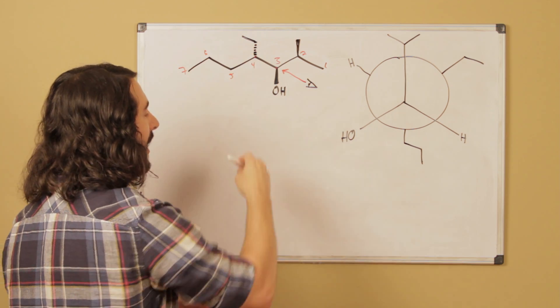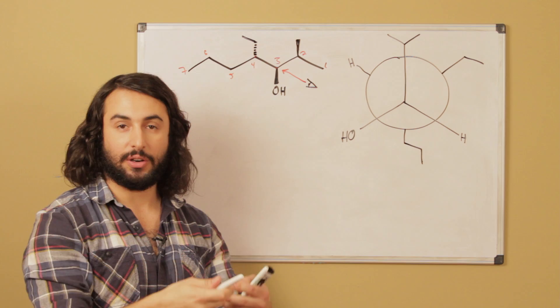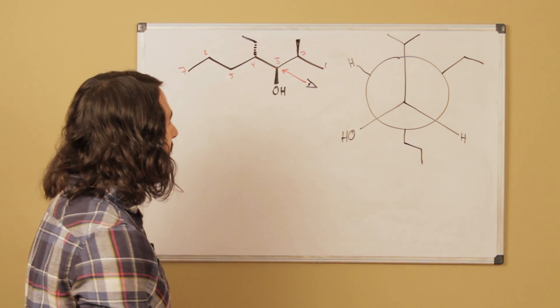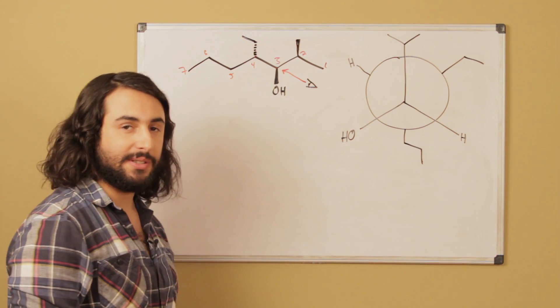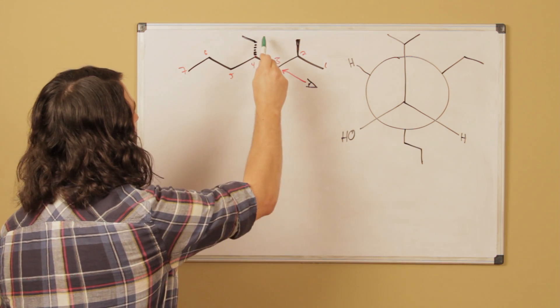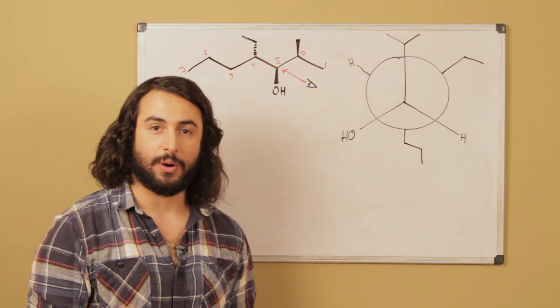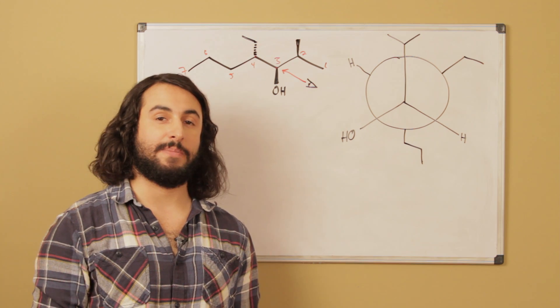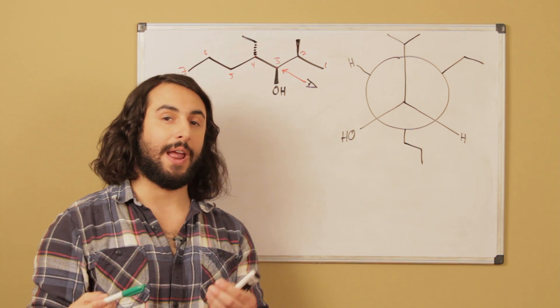Because if we went left to right, the hydroxyl would be occurring later than if we went this way. And now we have to recognize what substituents are in the molecule. So clearly we have a methyl group on carbon 2, and we have an ethyl group on carbon 4. And those are going to be listed alphabetically. So E-ethyl before M-methyl.